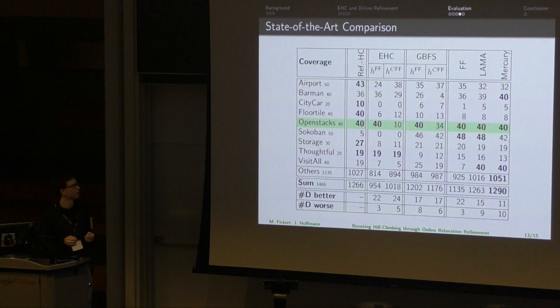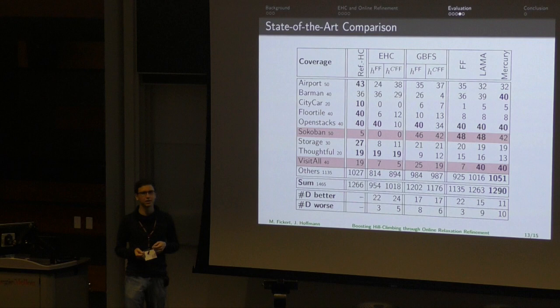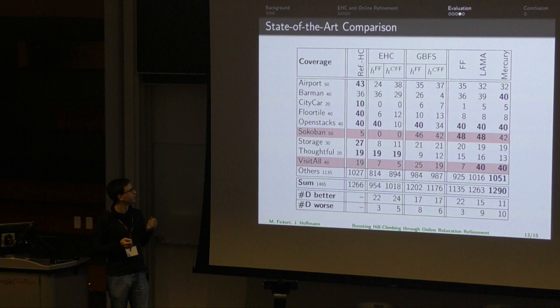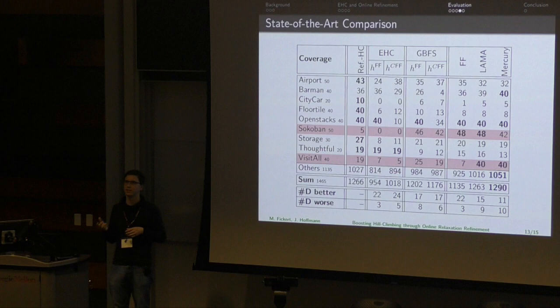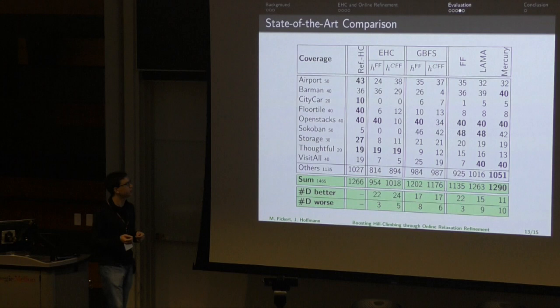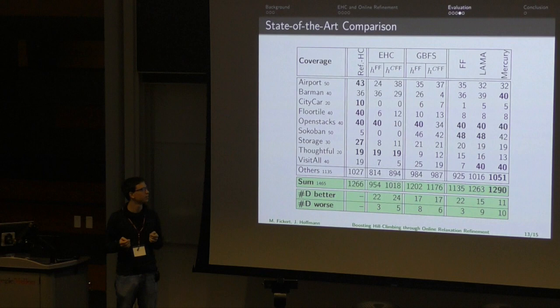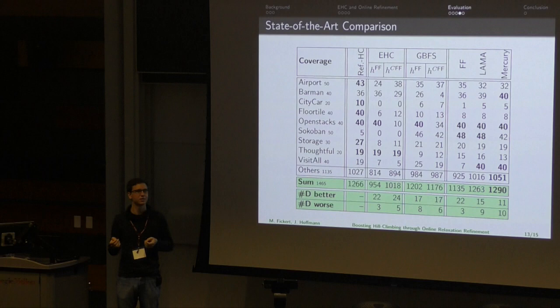Domains where the approach does not work well include Sokoban, where all hill climbing algorithms struggle due to many dead ends, and Visit-All, where LAMA and Mercury perform much better because they combine delete relaxation with a landmarks approach. Overall, total coverage is slightly better than LAMA's but worse than Mercury's. However, looking at the number of domains where we are better or worse compared to these competitors, we are actually better in more domains than all competitors.